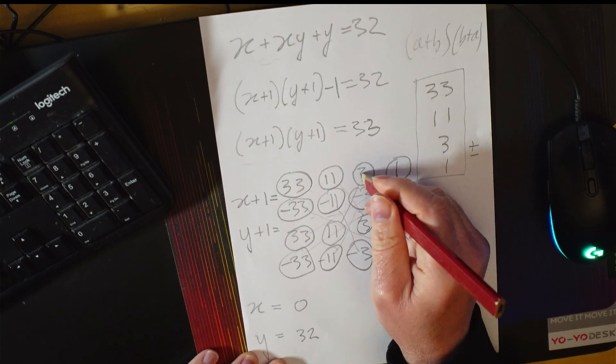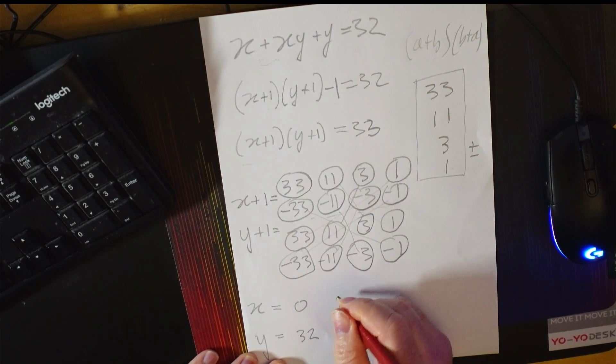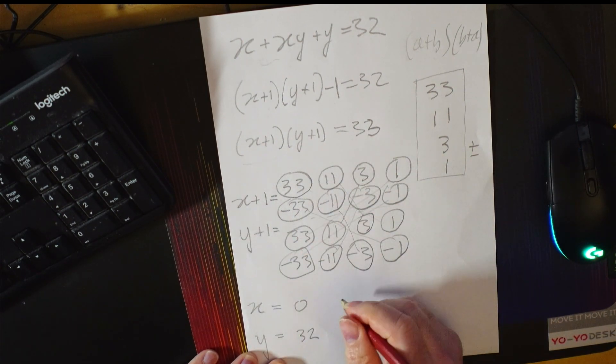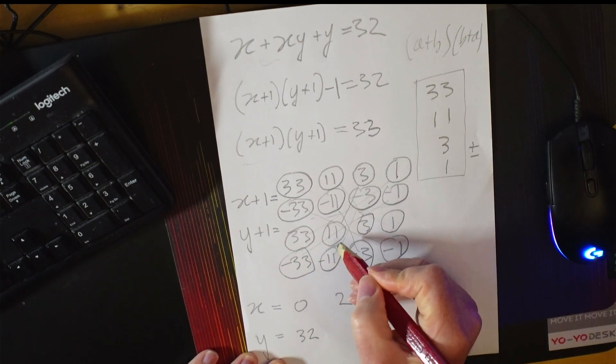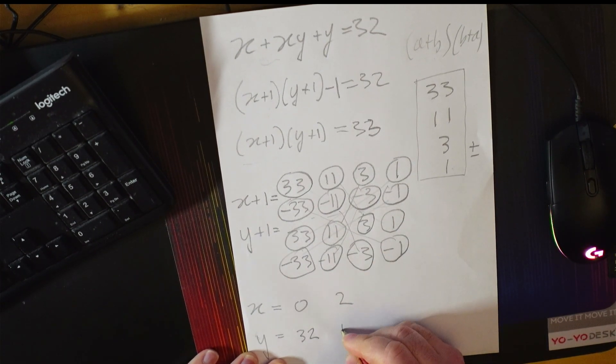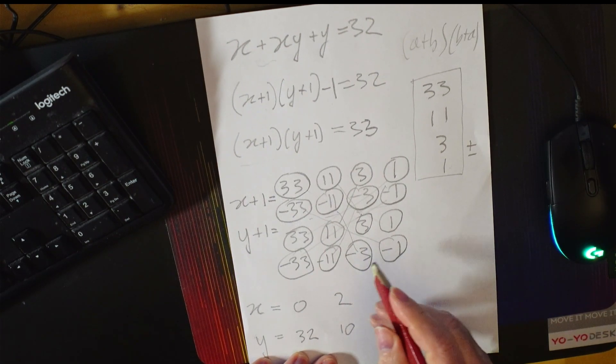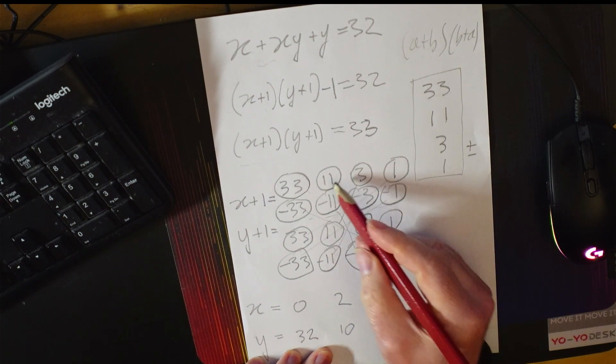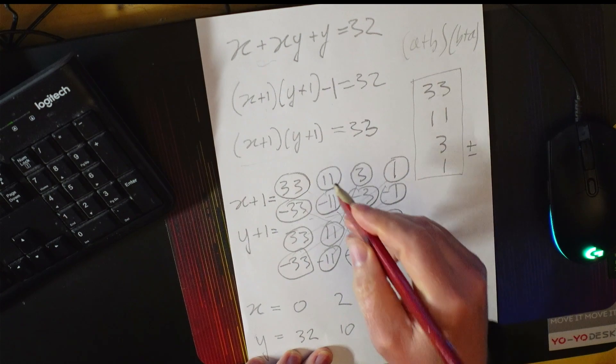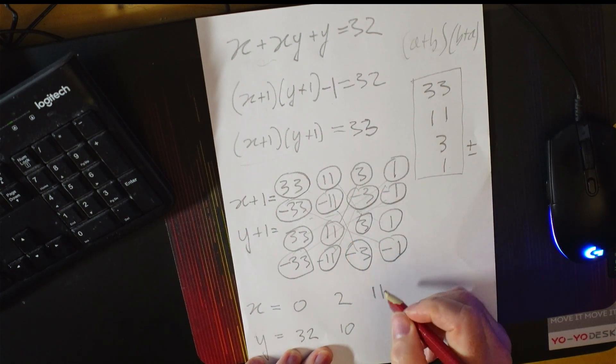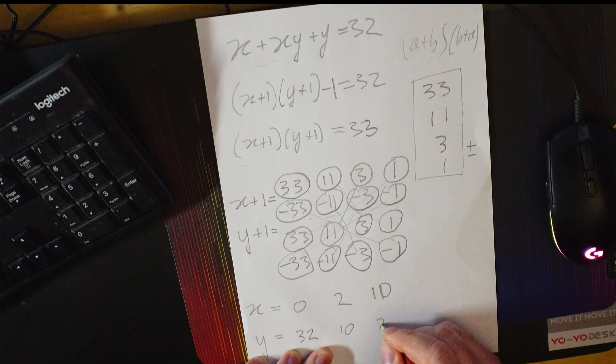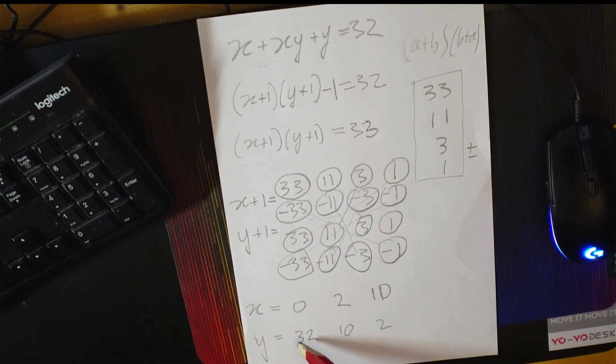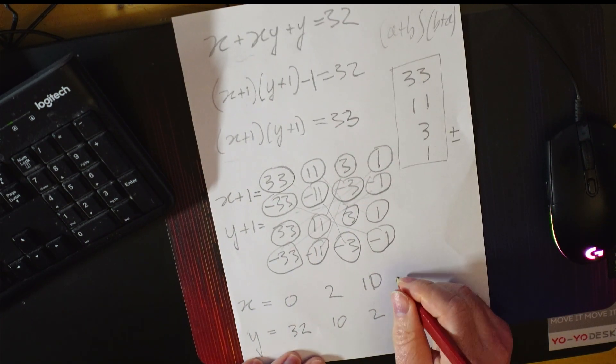We can then continue with the next one. If x plus 1 equals 3, then x needs to be 3 minus 1 which is 2, and that is 11 minus 1 which is 10. And we carry on like that. The next one is 11, well not 11, 10 sorry. I'll just subtract 1: 10, 2. Oh, it's the same. They're flipping around because of course it's symmetrical. So if you've got 0, 32, you'll also have 32, 0.